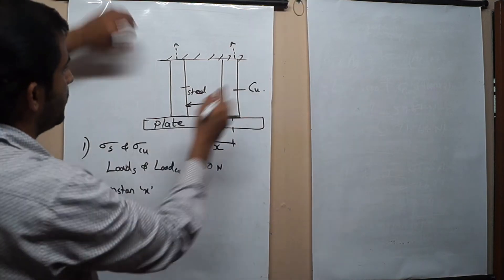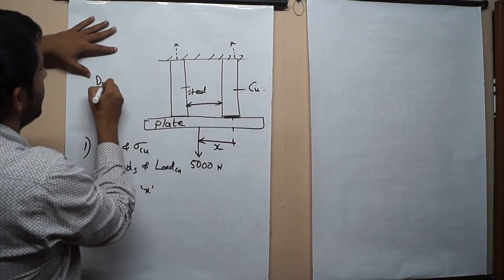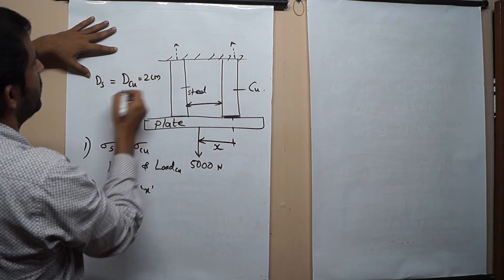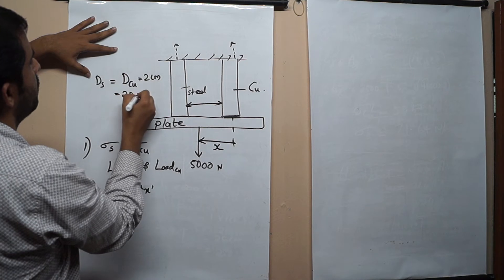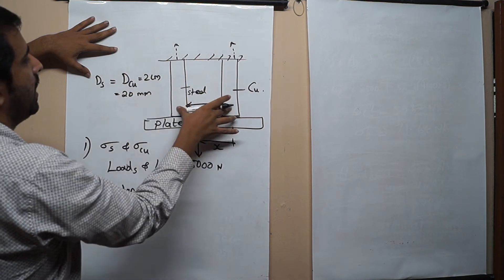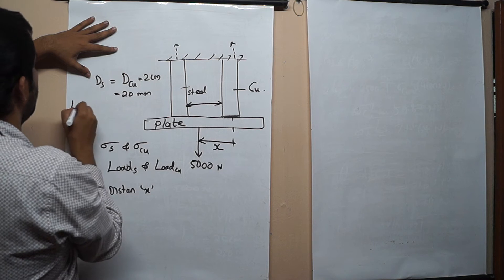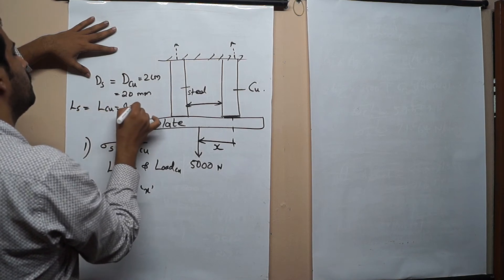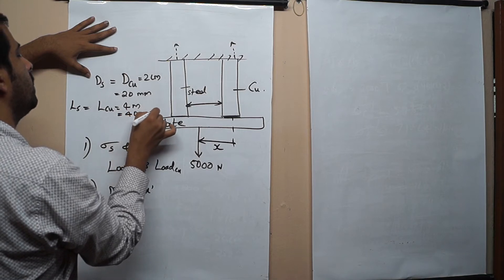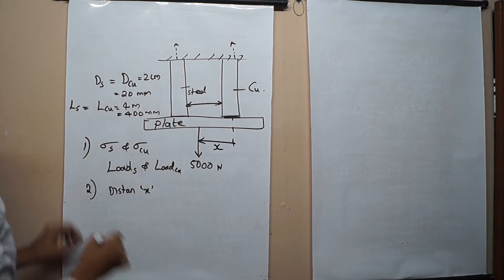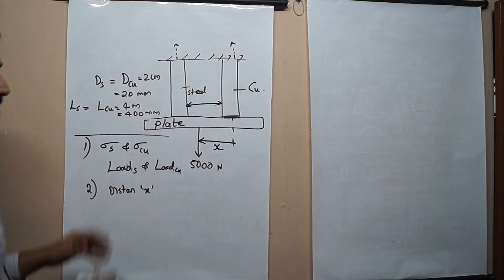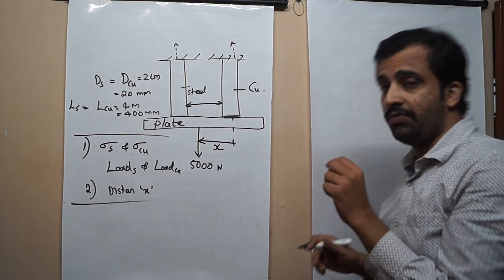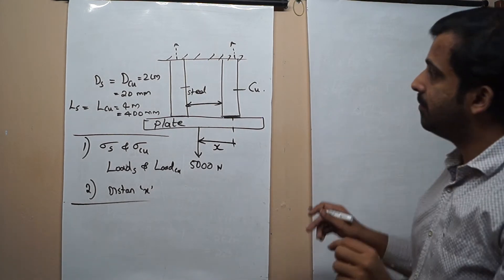The diameter of the steel rod equals the diameter of the copper rod, which is 2 centimeters, equal to 20 mm. The length of the steel rod and copper rod are also the same: length of steel equals length of copper equals 4 meters, that is 400 mm, as given in the question. These are the values we need to work with.